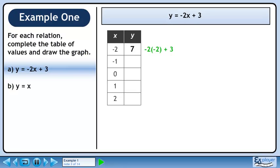If we multiply negative 2 by negative 2 and then add 3, we get 7. If we multiply negative 1 by negative 2 and then add 3, we get 5.